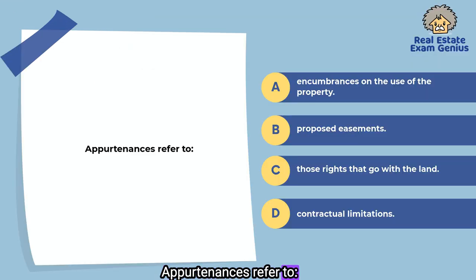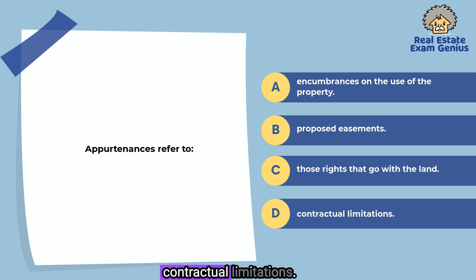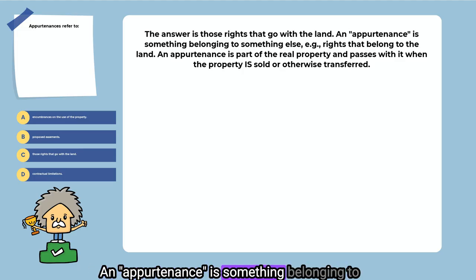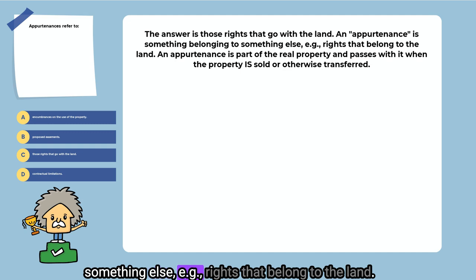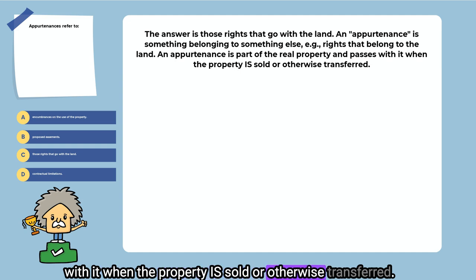Appurtenances refer to: encumbrances on the use of the property, proposed easements, those rights that go with the land, or contractual limitations. The answer is those rights that go with the land. An appurtenance is something belonging to something else, e.g., rights that belong to the land. An appurtenance is part of the real property and passes with it when the property is sold or otherwise transferred.